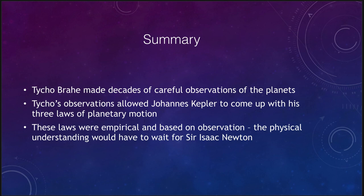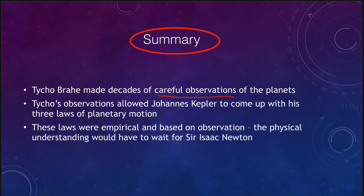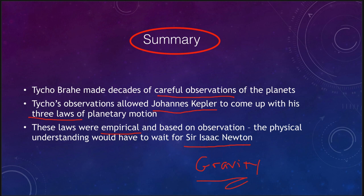So let's finish up with our summary. In this section we looked at Tycho, who made many years of careful and extremely detailed observations of the planets — the most accurate to that time. His observations allowed Kepler to come up with three laws of planetary motion. These laws were empirical, based on observation; we did not yet have the physical understanding — that would have to wait for Sir Isaac Newton and his understanding of gravity to explain the physical basis for the laws Kepler found. That concludes our lecture on understanding the orbits of the planets and the work of Tycho and Kepler. We'll be back again next time.